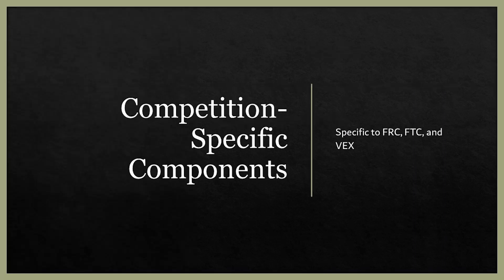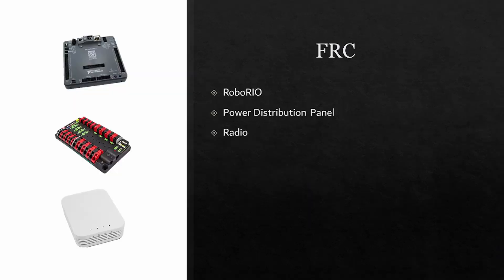Now that we have gone over the basic components that every team uses, we can continue on to the competition-specific components. We begin with some FRC components. The first component is the RoboRIO — it is the control module on every FRC robot.